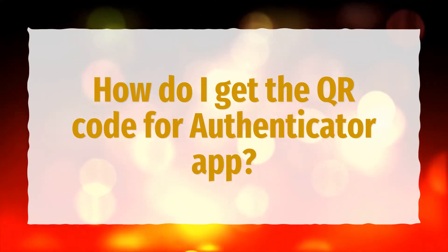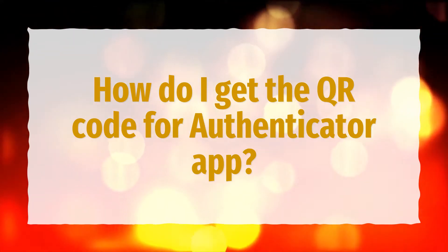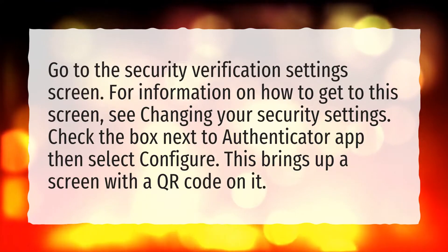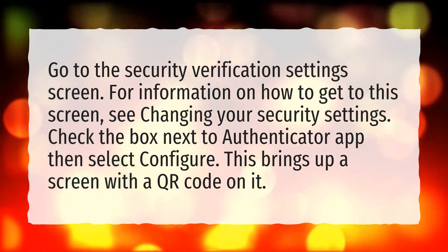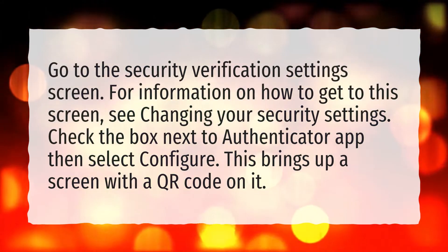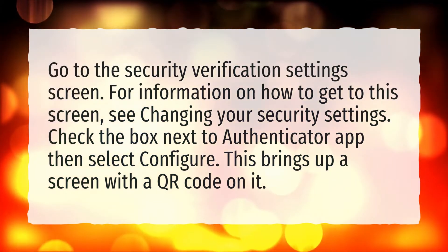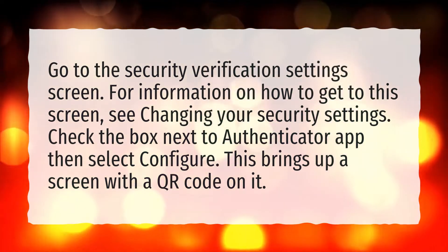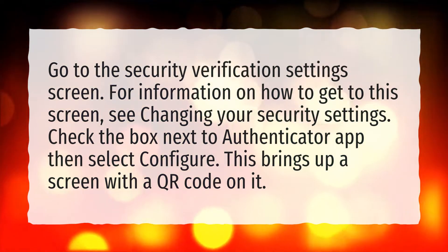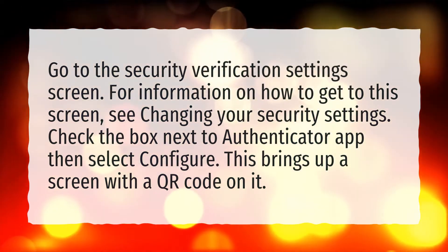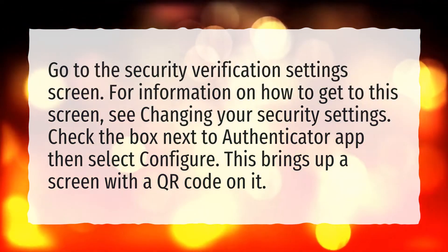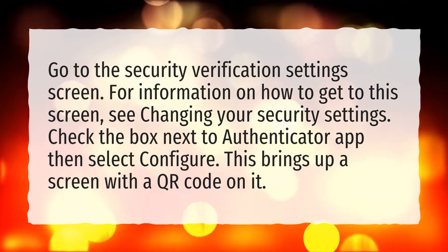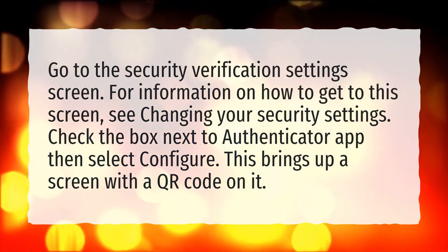How do I get the QR code for Authenticator App? Go to the Security Verification Settings screen. For information on how to get to this screen, see Changing your Security Settings. Check the box next to Authenticator App, then select Configure. This brings up a screen with a QR code on it.